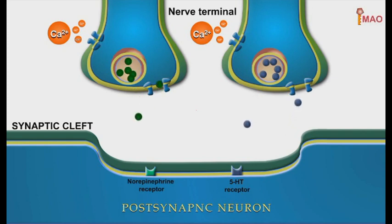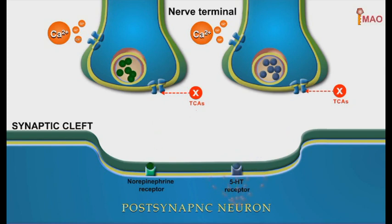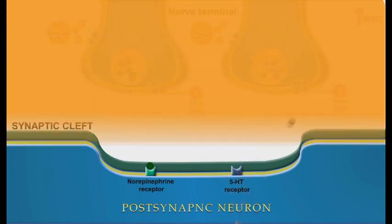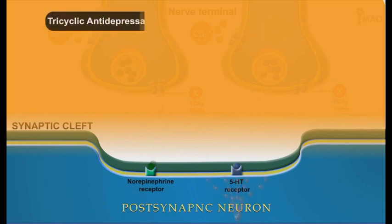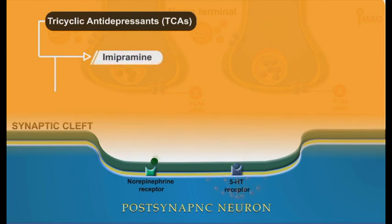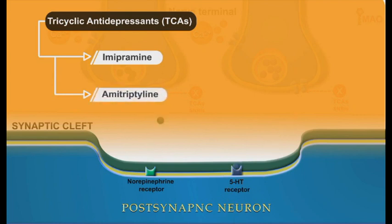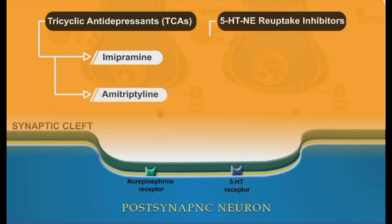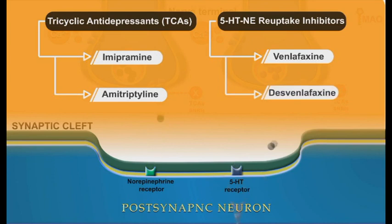This can be achieved by different ways. The tricyclic antidepressants, known as the TCA group, and the serotonin and norepinephrine reuptake inhibitors, known as SNRIs, work through more or less similar mechanisms by non-selectively inhibiting the presynaptic reuptake of both serotonin and norepinephrine. TCAs include imipramine and amitriptyline. Examples of SNRIs are venlafaxine and desvenlafaxine.